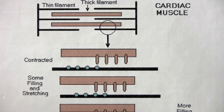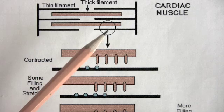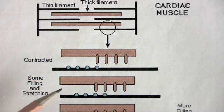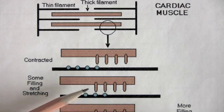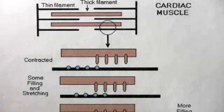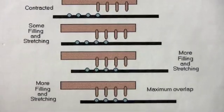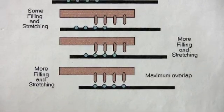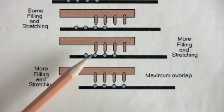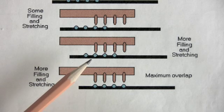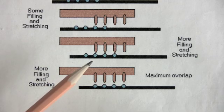In the sarcomere there are hundreds, thousands of cross bridges. As the heart begins to fill, the thick and thin filaments begin to slide apart. Some filling has taken place, some stretching of the muscular wall of the heart. If the heart begins a contraction at this state, let's say a strength of two cross bridges worth. If, on the other hand, the heart begins to fill more, stretching the walls a little more, sliding the thick and thin filaments a little further apart, and the contraction begins, because of more overlap we would have, in this example, three cross bridges worth of strength.